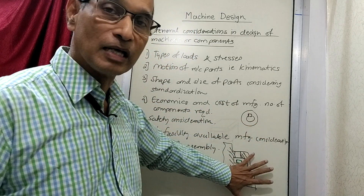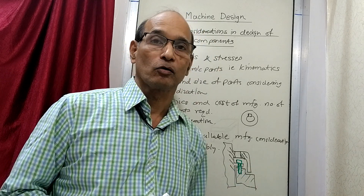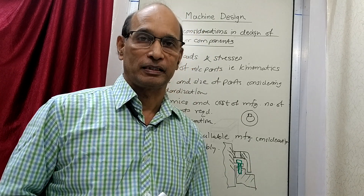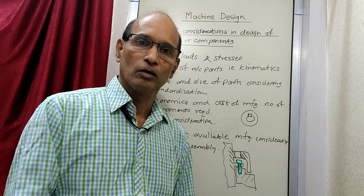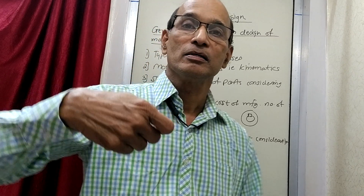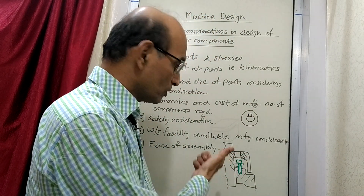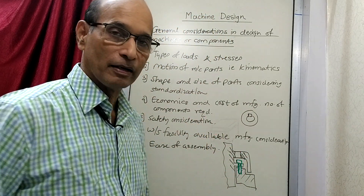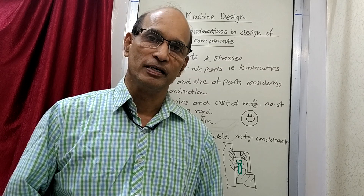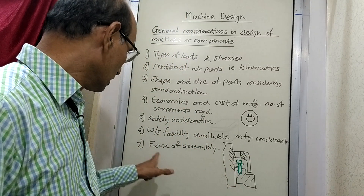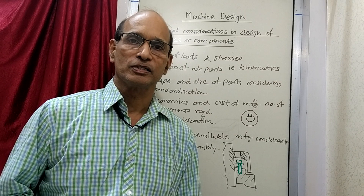You feel everything is done, but your drawing shows that a hexagonal bolt is expected here. A hexagonal bolt is to be clamped using a spanner. Now, how you will operate this with a spanner — not possible. So again there is a difficulty; the problem of assembly is still not taken into consideration.